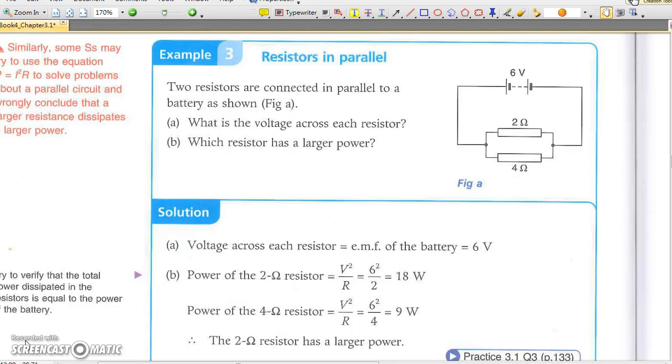In example 3, two resistors are connected in parallel. One has a larger resistance. Which one will produce a larger power? As the same voltage develops across the two resistors, the one with a smaller resistance will produce a larger power as power equals V square over R for a common voltage V.